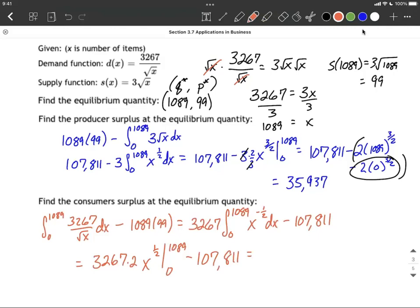Alright, so as we evaluate this, we're going to get 6534, and then we have 1089 raised to the one-half power minus 6534 times 0 raised to the one-half power, and then at the end, we have to subtract away that 107,811.